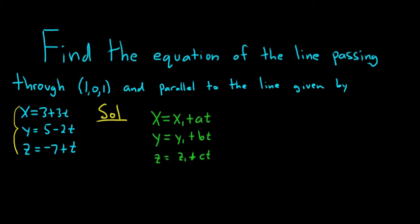Alright, so all we have to do is figure out what is what in this problem. So our x₁ is right here. That's our point. We need a point on the line. Our y₁ is 0 and our z₁ is 1. So that part's easy.